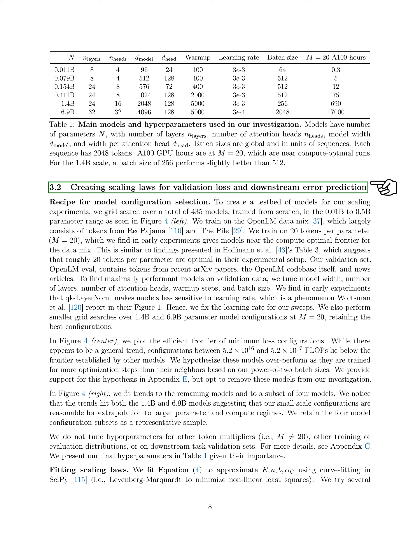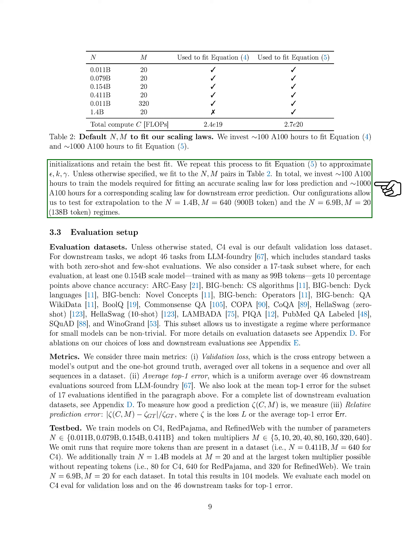Section: Main. In this section, we train various models on different datasets with specific numbers of parameters and token multipliers. We skip runs that need more tokens than available in a dataset. We also train models with larger parameters and tokens without repetition. Overall, we end up with 104 models that we evaluate on validation loss and error for different tasks.